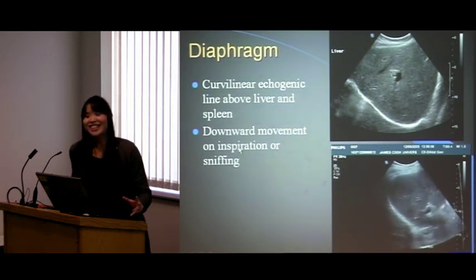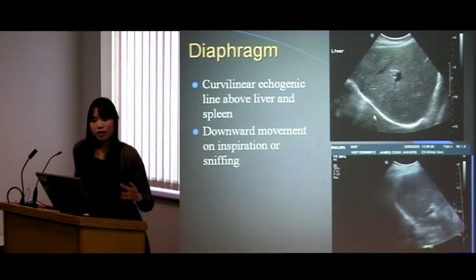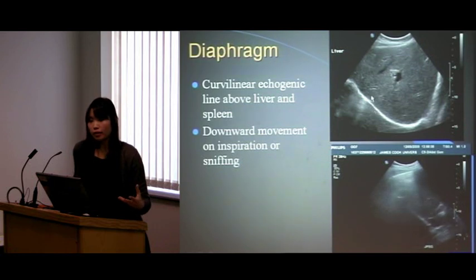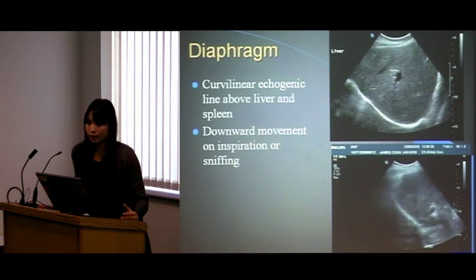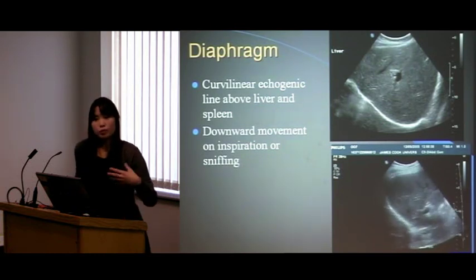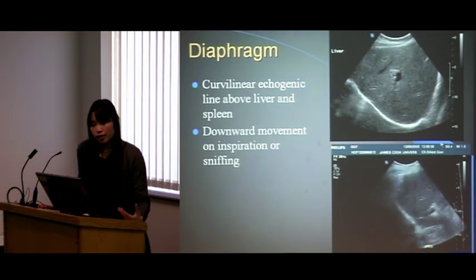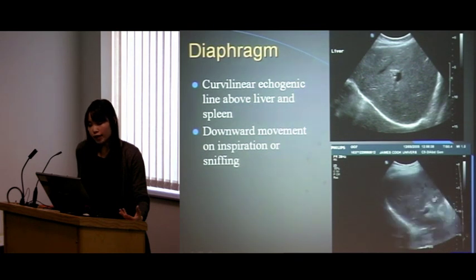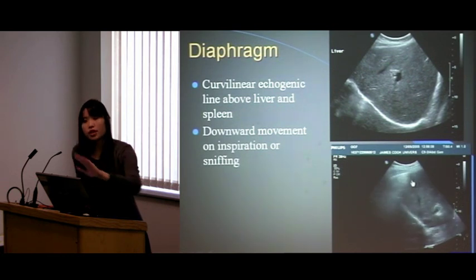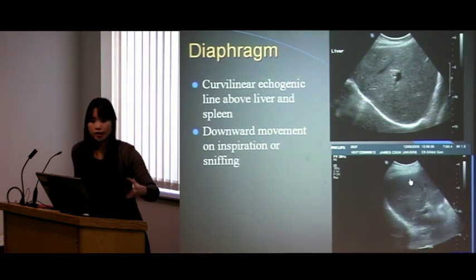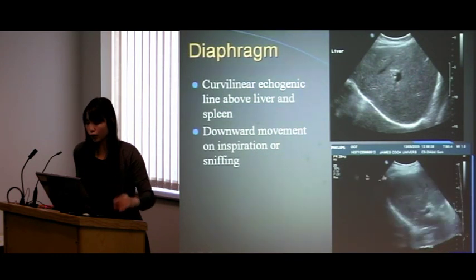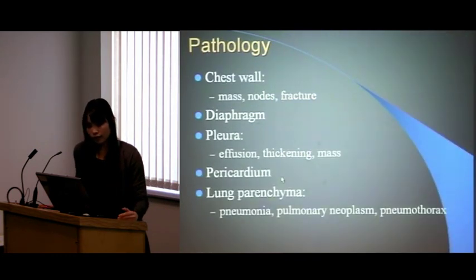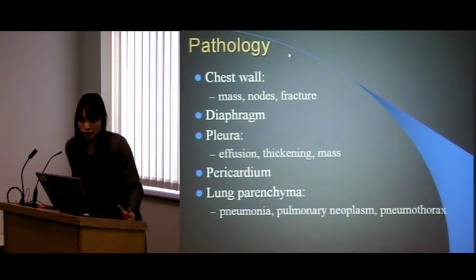Moving on to the diaphragm: it's a thick curvilinear echogenic structure, directly above the liver and spleen. When the patient breathes in and out, or when they sniff, it should move down — that's normal. You can also see this white curtain coming across, which is just normal air in the lungs covering the pleura and soft tissue.